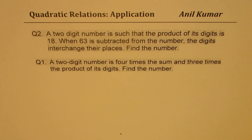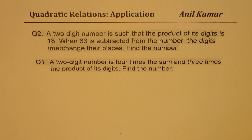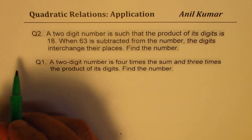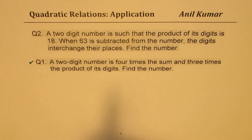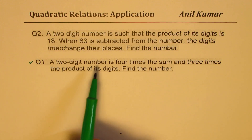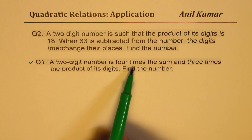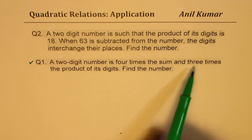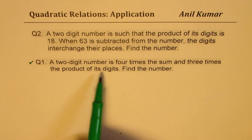I would like you to pause the video, answer these questions, and then look into my suggestions. So most of the time in two-digit numbers, we are working with the one's and ten's place. We are trying to flip them — left or right. So I just flipped the question numbers also. Let's try to see how to do question number one: a two-digit number is four times the sum and three times the product of its digits.